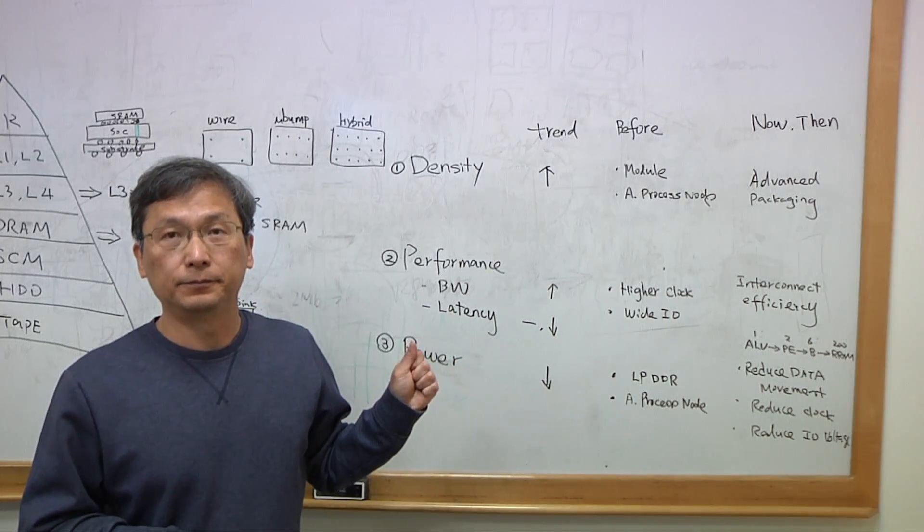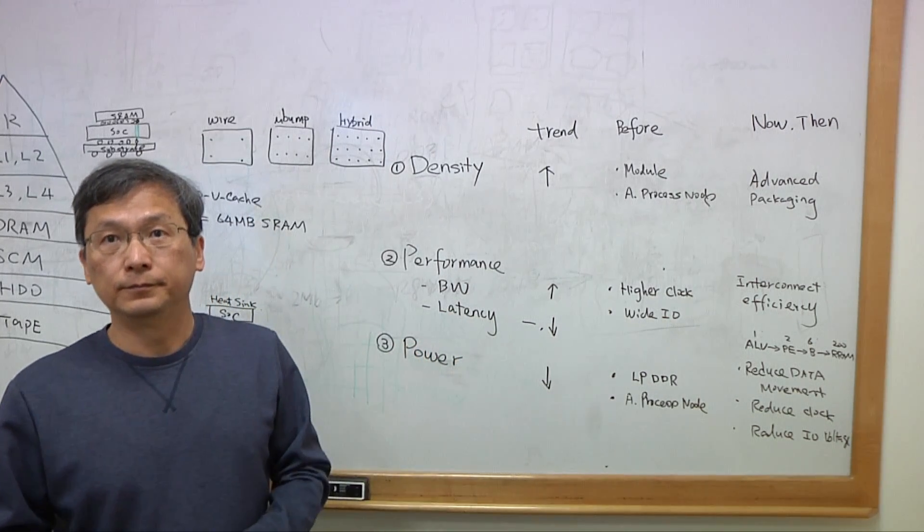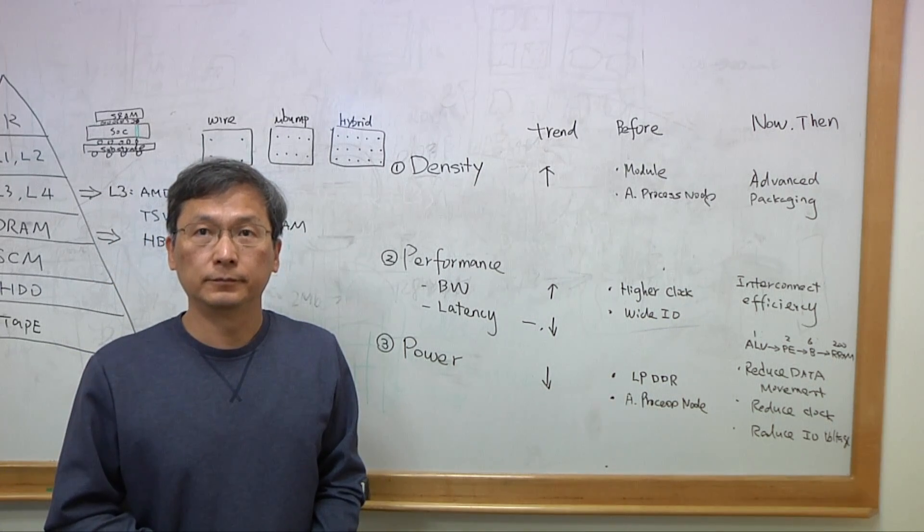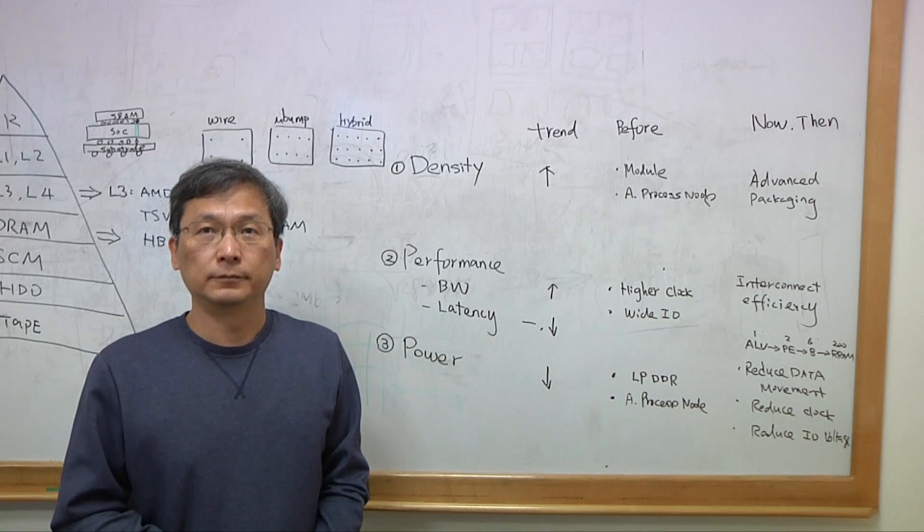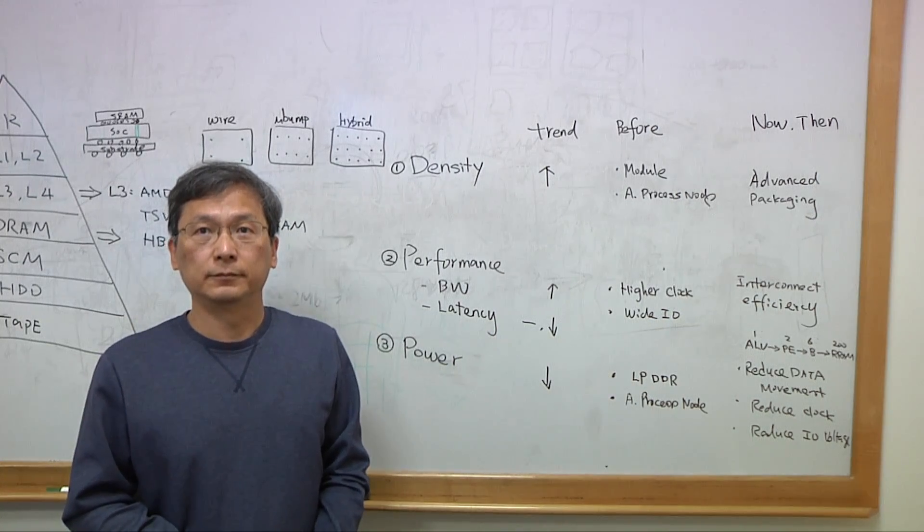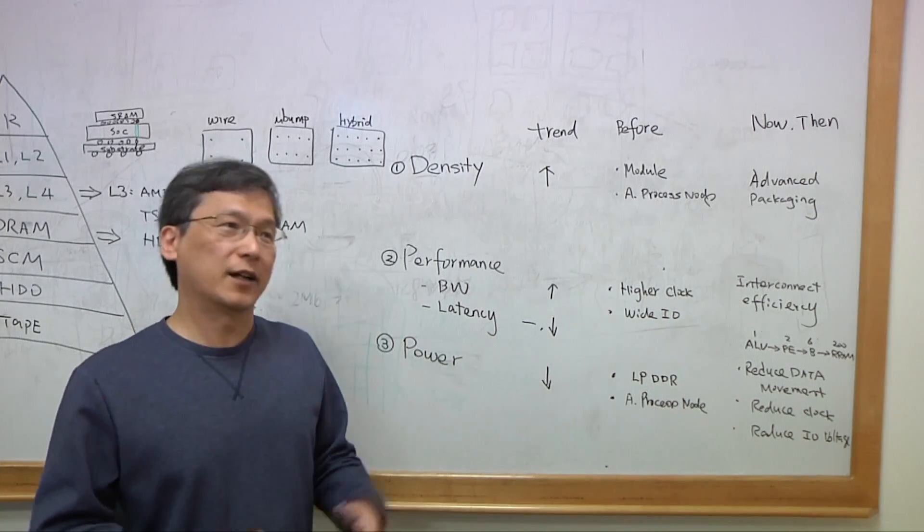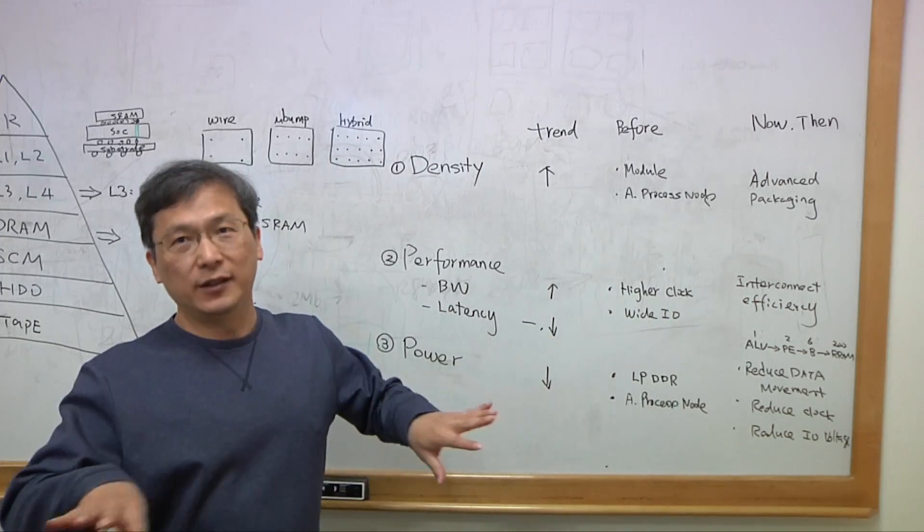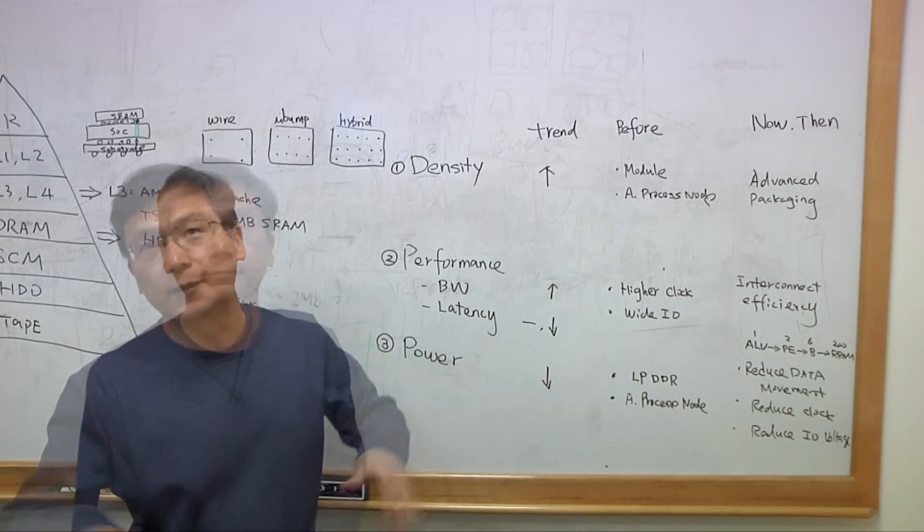And when you talk about all three of those together, that's really what the memory wall is all about. The so-called, you can't get the data in and out fast enough. It takes too much power in order to do it. And part of the reason is just higher density. Basically, they're combined together. You cannot separate them independently.